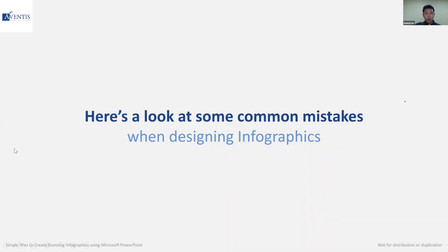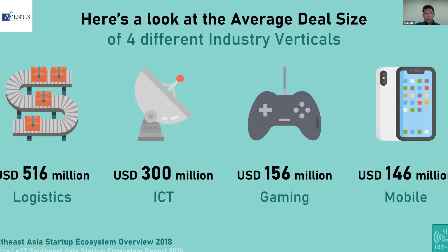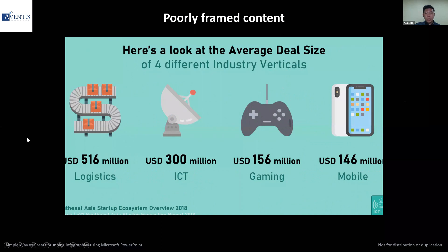The first common mistake is poorly framed content. The content is spilling out of the slide area — the design area is overflowing. The designer is unsure of how much space they have to put the content within the slide, so they actually overshoot the actual design area and the content spills over as a result. This means you crop out part of the content that you're trying to present.